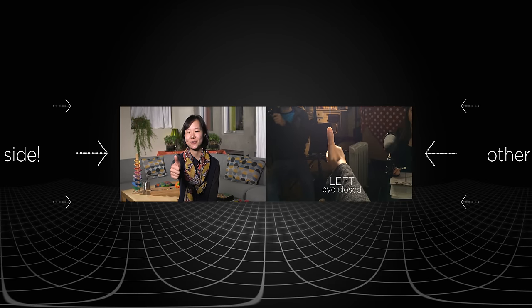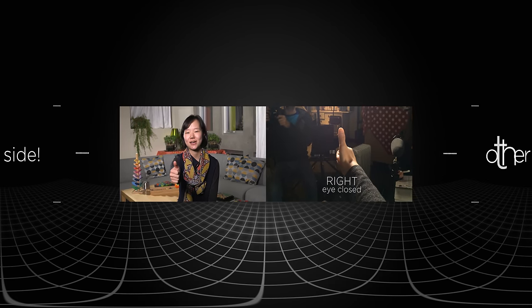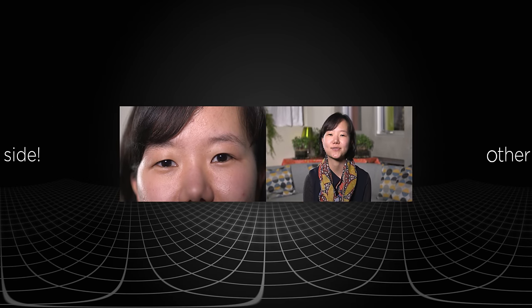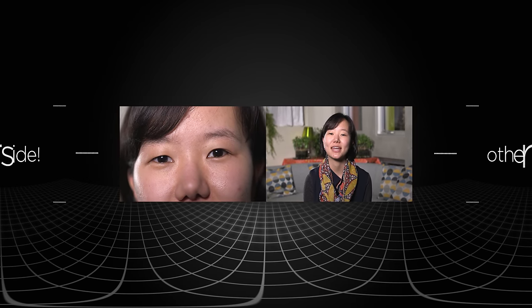Depending on how close or far you hold out your thumb, it'll jump more or less. Our brain gets a sense of how far an object is depending on how different it appears from the left versus the right eye. And that's 3D vision.